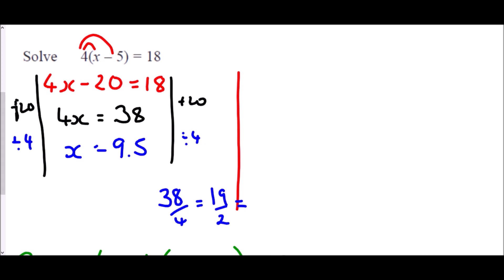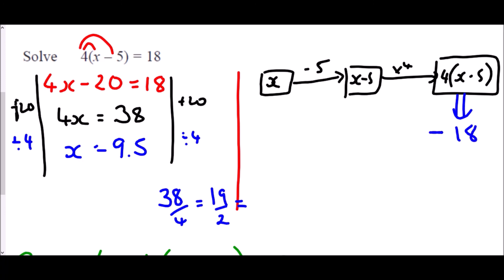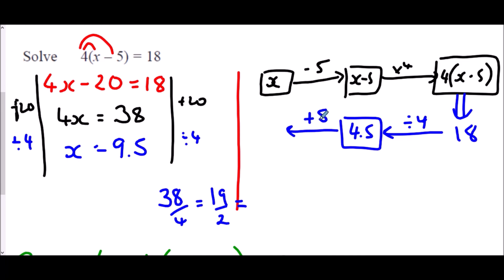Using the flow chart for 4 brackets x minus 5 equals 18, we start with x. The first thing that happens is we take away 5 to get x minus 5, then multiply by 4 to get 4 brackets x minus 5, which equals 18. Working backwards: divide by 4 — 18 divided by 4 is 4.5; then instead of taking away 5 we add 5 — 4.5 plus 5 is 9.5. Both methods give the same answer: x equals 9.5.